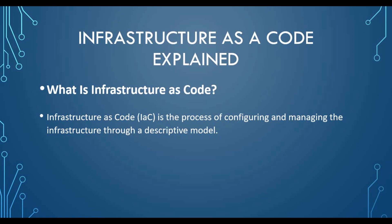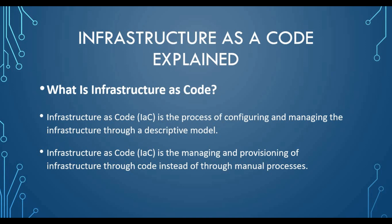When you set up a data center or a small system, you need a lot of configuration. Traditionally you procured a physical server and so on. Now a lot of things have been virtualized and moved to cloud. In simpler terms, infrastructure as code is managing and provisioning infrastructure through code instead of manual processes. Rather than manually creating a virtual machine through a portal, you write a descriptive code specifying memory and model, then run that code to create the virtual machine every time.